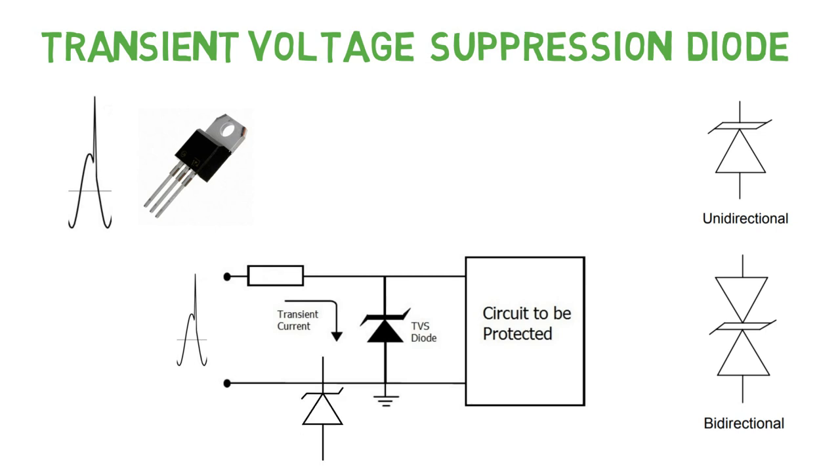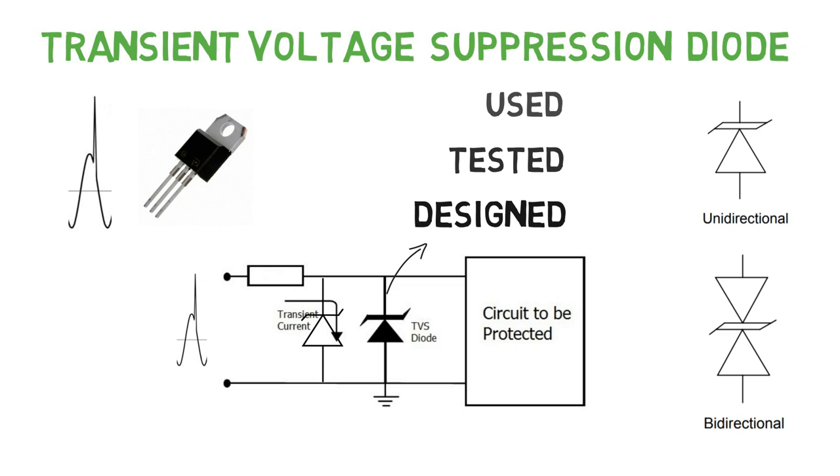Most of us get confused between Zener diode and TVS diode because VI characteristics of both diodes are the same. But TVS diodes are specially designed, tested and used for transient voltage suppression. Unlike Zener diodes, which are used specifically for voltage regulation.